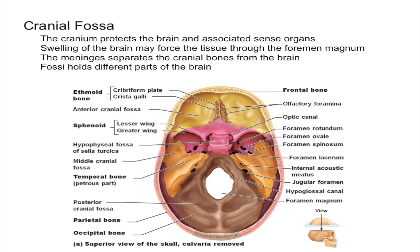Looking at this diagram from the top down, cut across the middle, we can identify each fossa. The anterior cranial fossa is all up front, separated by a ridge line. The middle cranial fossa is in the center region. And the rest is the posterior cranial fossa, all in the back.